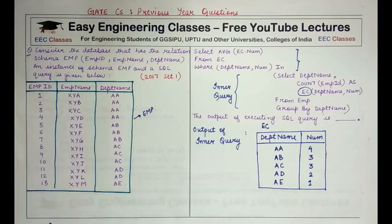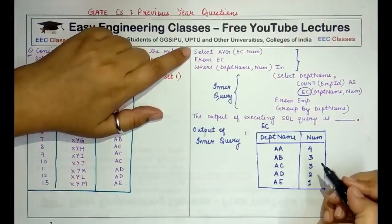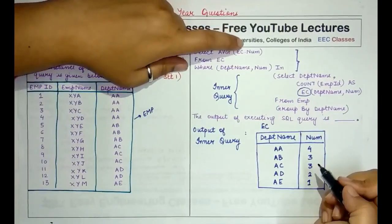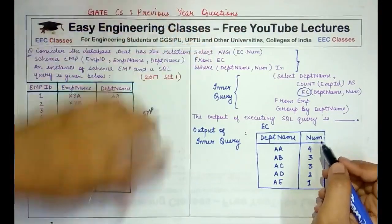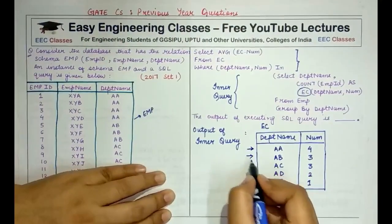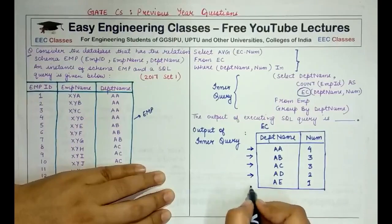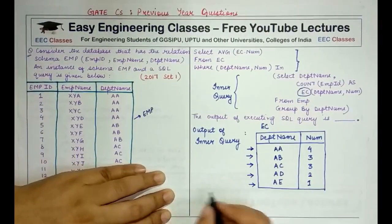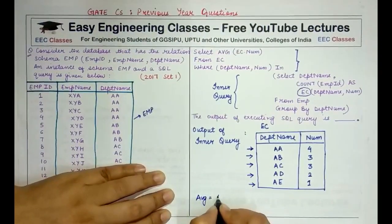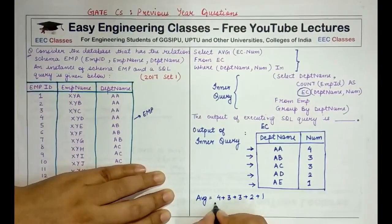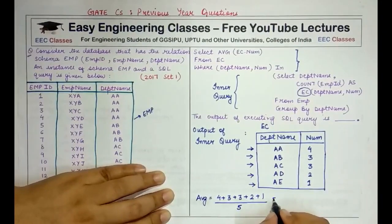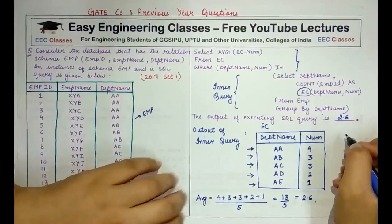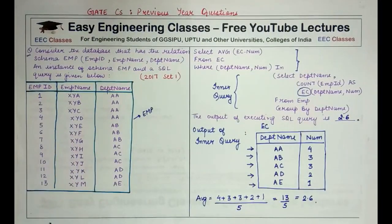Now we go to the outer query, which asks for the average of ec.num where (dept_name, num) are present in the inner query's output. So for all rows in the inner query result, we find the average of the num column. The average is (4 + 3 + 3 + 2 + 1) / 5 = 13 / 5 = 2.6. The answer is 2.6. Always start from the innermost query and proceed outward.